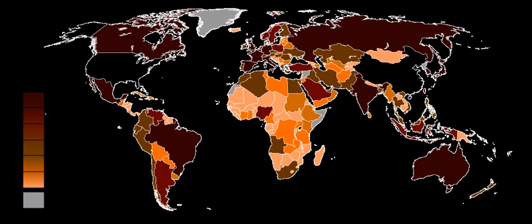Gross domestic product is a monetary measure of the market value of all the final goods and services produced in a period of time, often annually or quarterly. Nominal GDP estimates are commonly used to determine the economic performance of a whole country or region, and to make international comparisons.